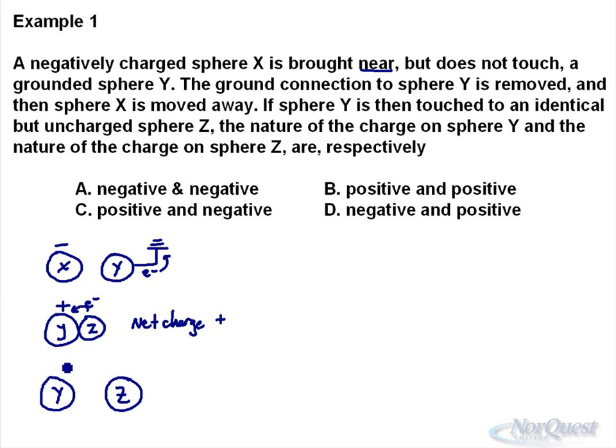So whatever the charge was, it'll be half as positive but it'll still be positive and the other will be half as positive to give, still give you a net charge of positive whatever that number would be.